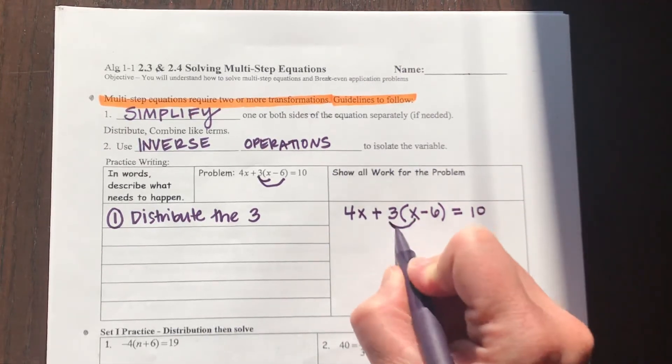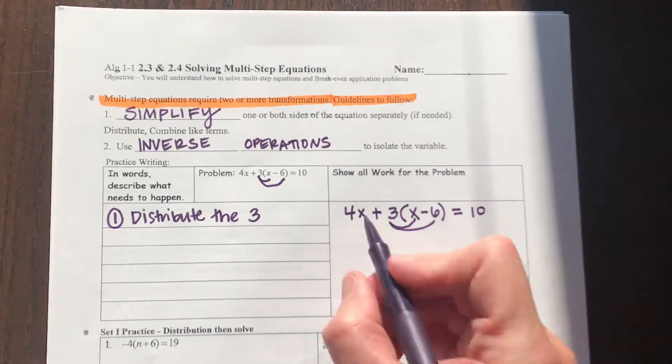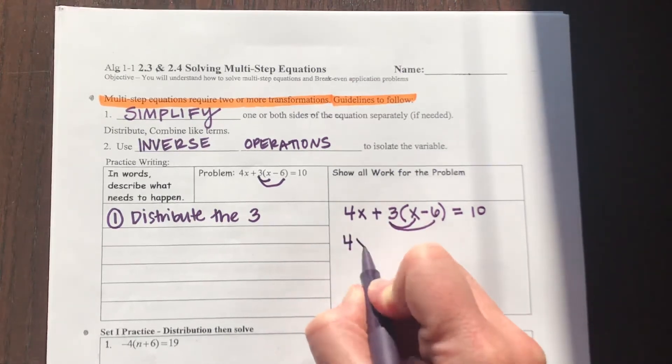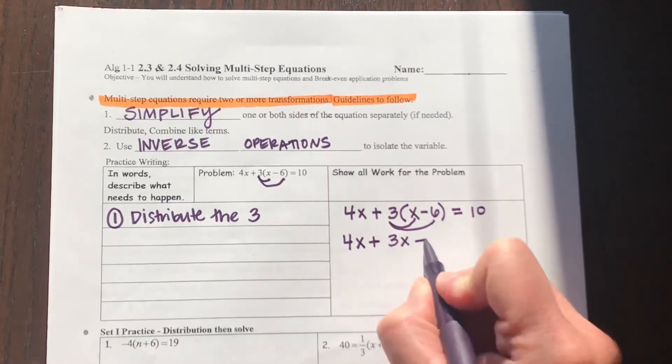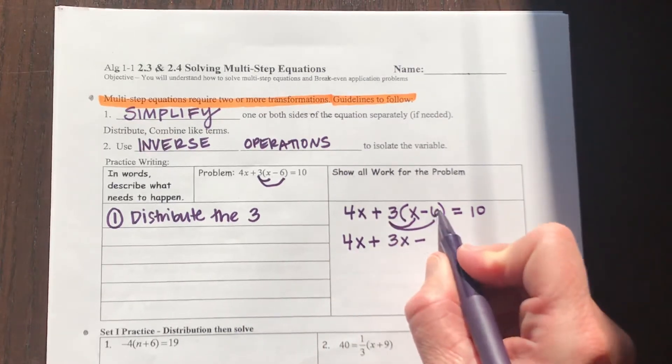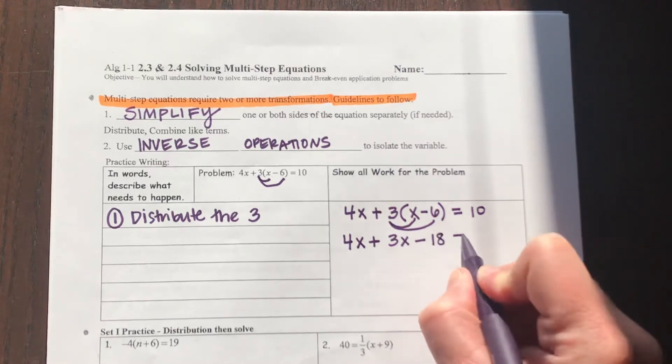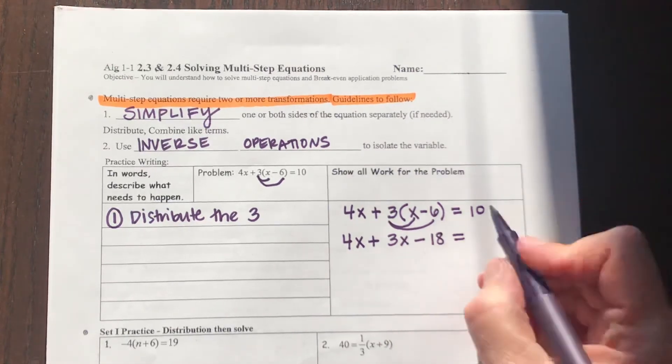If I distribute the three first, my equation will now be 4x plus 3 times x minus 6 times 3, which is 18, and that equals the number 10.